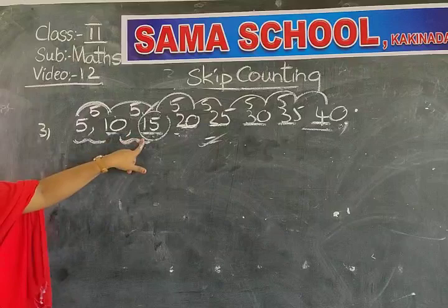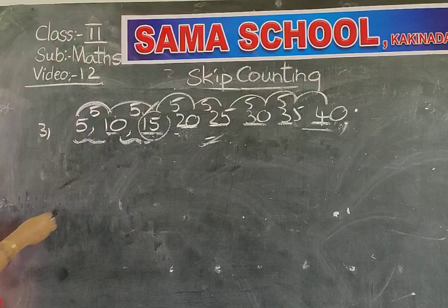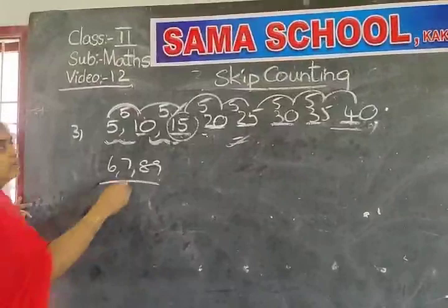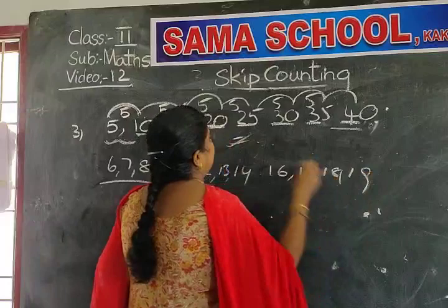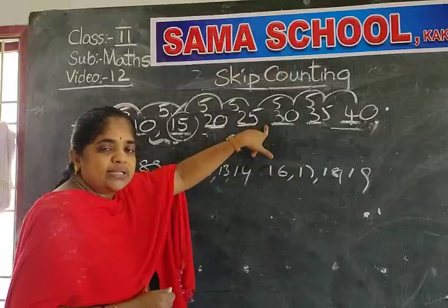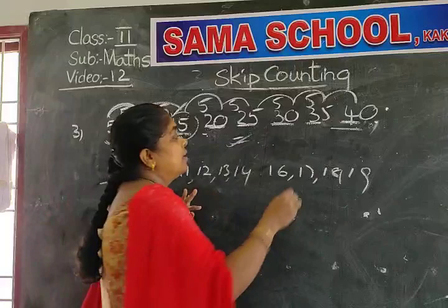Once you observe this pattern: 5, 10, 15, 20, 25, 30, 35, and 40. We are skipping four numbers each time. Here: 6, 7, 8, 9 we skip. Here: 11, 12, 13, 14. Here: 16, 17, 18, 19 we didn't write. We are writing the fifth number. 31, 32, 33, 34 — four numbers skipped; 36, 37, 38, 39 — four numbers skipped. Fifth number we wrote.